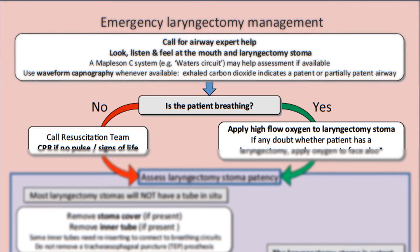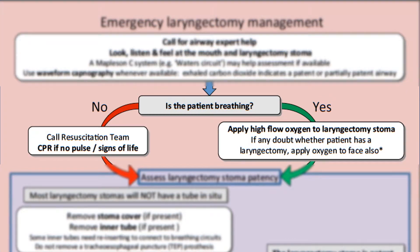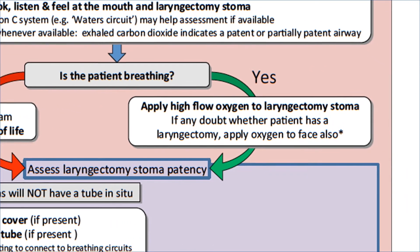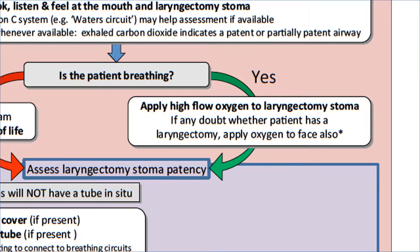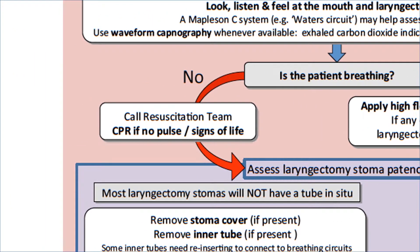as it gives a pictorial display of the CO2 concentration in expired air. With this assessment, you want to find out if the patient is breathing. If the patient is breathing, then apply high-flow oxygen to the laryngectomy stoma. If you have any doubt about whether the patient has a laryngectomy, then apply oxygen to the mouth and nose as well. Bear in mind, laryngectomy patients have an end stoma and cannot be oxygenated via the mouth or nose. If the patient is not breathing, then you will need to assess for signs of life and, if necessary, begin CPR.